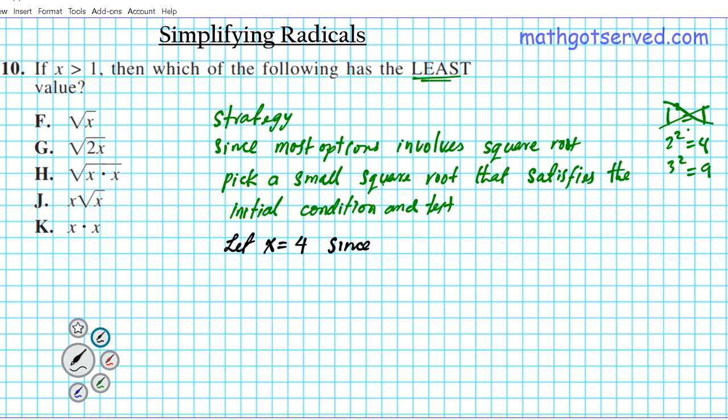Why? Well, since 4 is greater than one, and it's a perfect square, so it works nicely. Now, let's go ahead and test it out. F, square root of x is going to be square root of 4, the square root of 4 is 2. So you see why we selected the perfect square, right? It makes our computation easy.